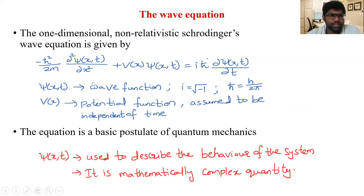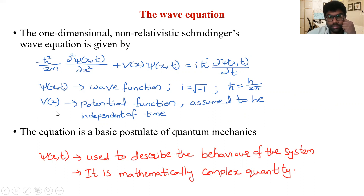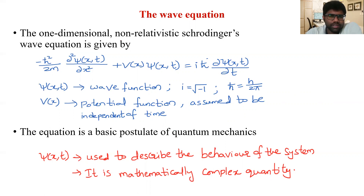V(x) is the potential function or potential energy, and it is assumed to be independent of time — only a function of space. This equation is a fundamental postulate of quantum mechanics, used to describe the behavior of a particle in a system. The wave function ψ(x,t) is a mathematically complex quantity, meaning it has both real and imaginary components.